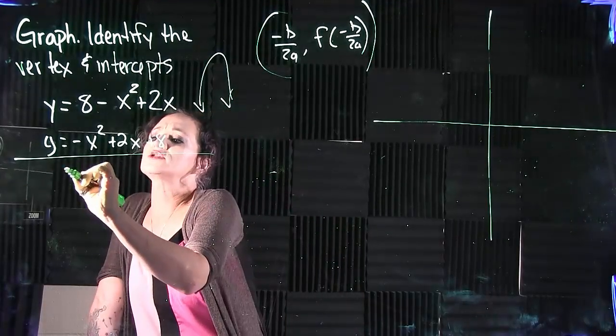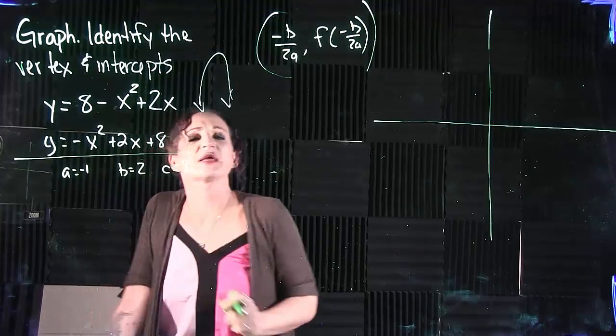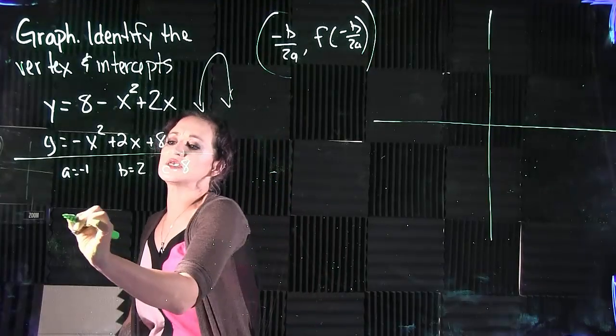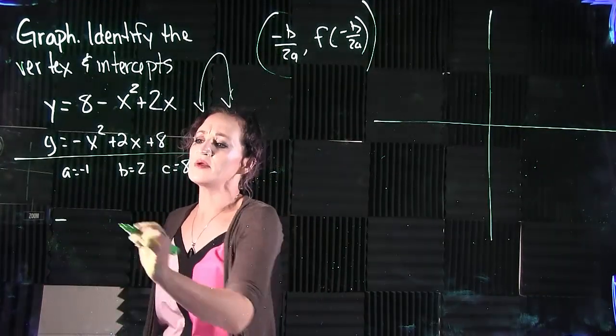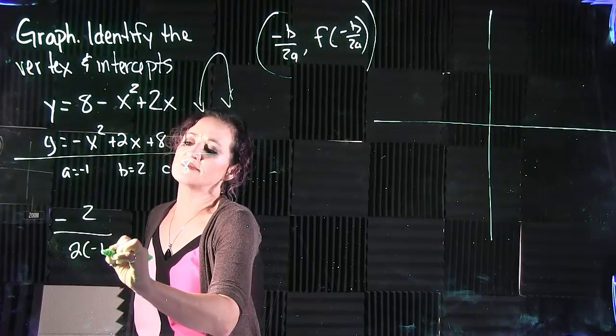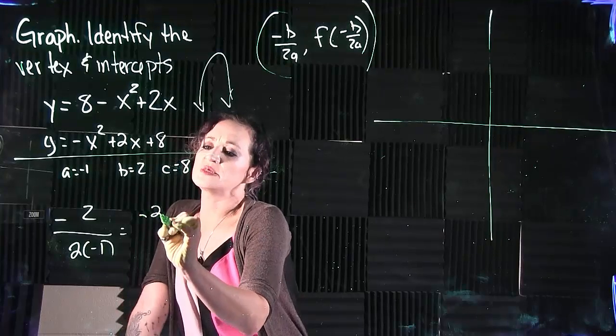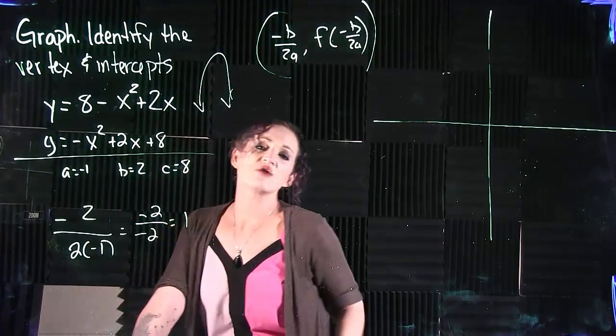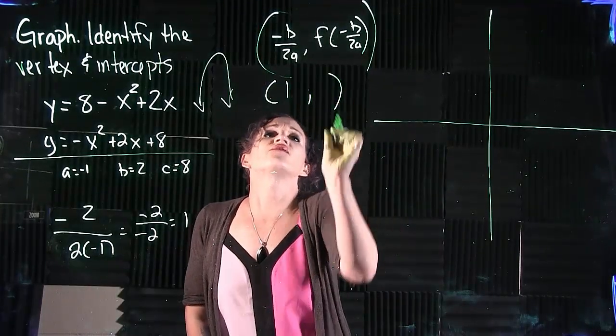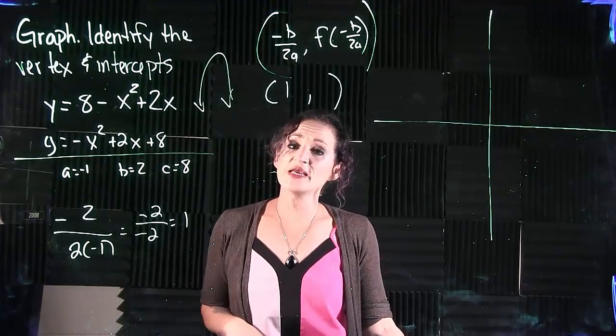So if we take a look at our equation, a is negative 1, b is 2, and c we don't really need it, but c would be an 8. If we plug it into our little equation here: negative, as part of the formula, b is 2 over 2 times a, which gives us 2 times negative 1. Which means we have negative 2 up top, negative 2 down bottom, giving us that our x value here for our vertex is 1.